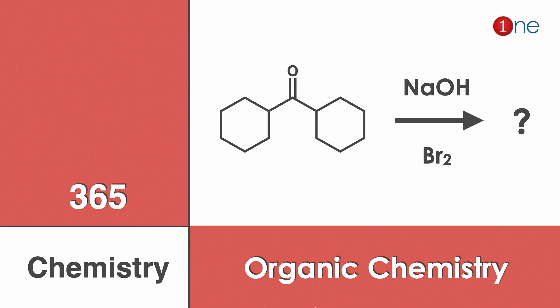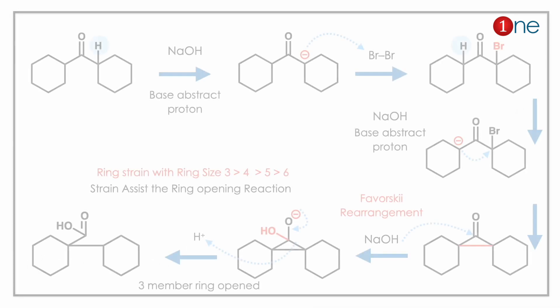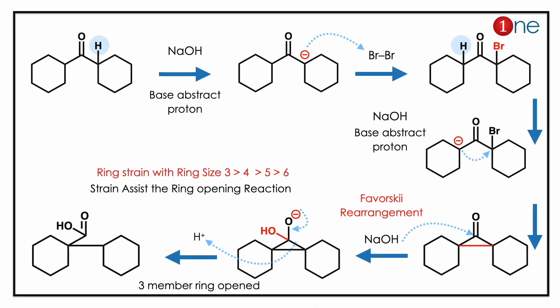Here you have a ketone — it definitely has an alpha hydrogen which is acidic. You are using the base; the base abstracts the proton. What really happens is the nucleophile attacks the bromine, forming a carbon-bromine bond, and then the more acidic proton is removed, making it an internal nucleophile.